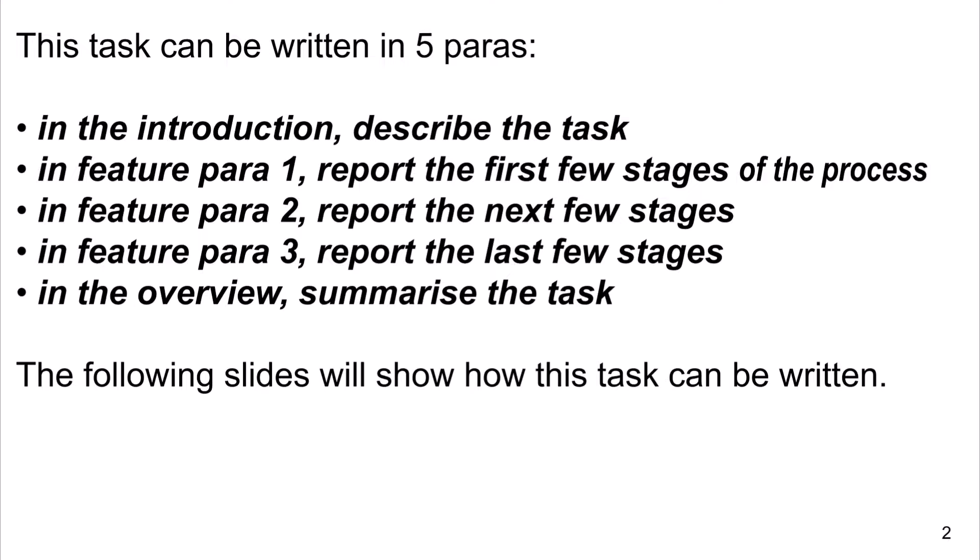This task can be written in four paragraphs. In the introduction, describe the task. In Feature Para 1, report the first few stages of the process. In Feature Para 2, report the next few stages. In Feature Para 3, report the last few stages. And in the overview, summarize the task. The following slides will show how this task can be written.